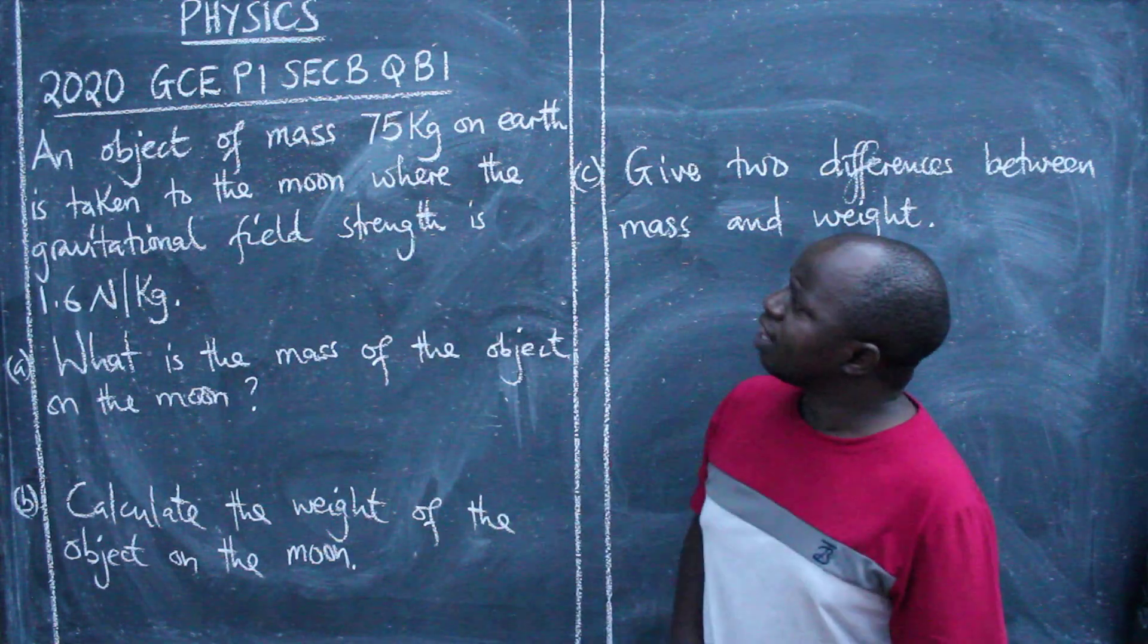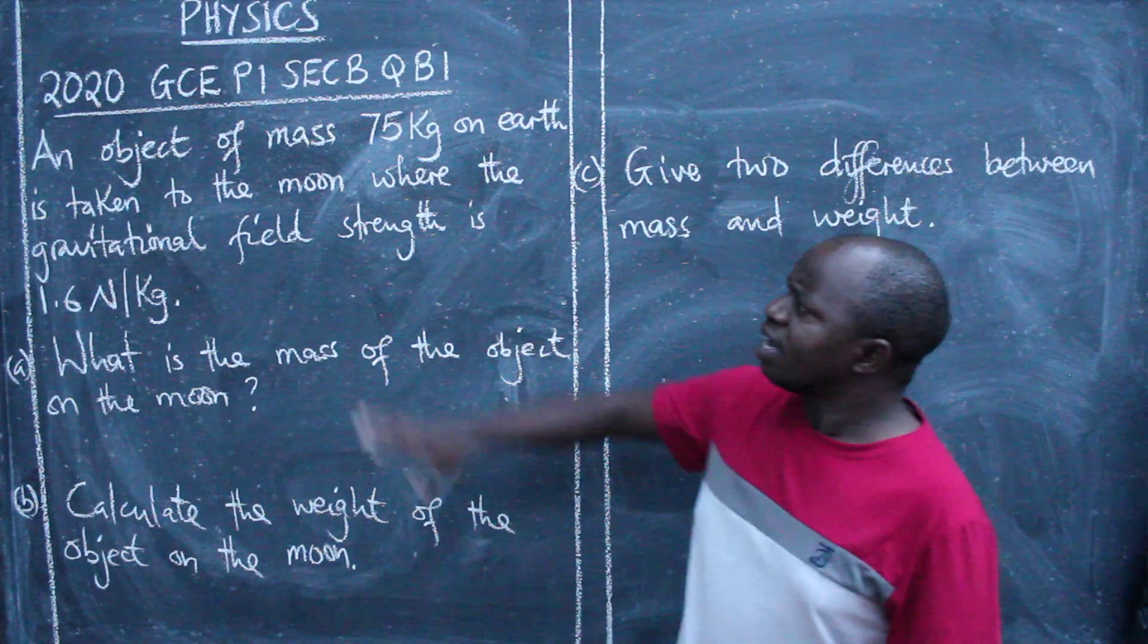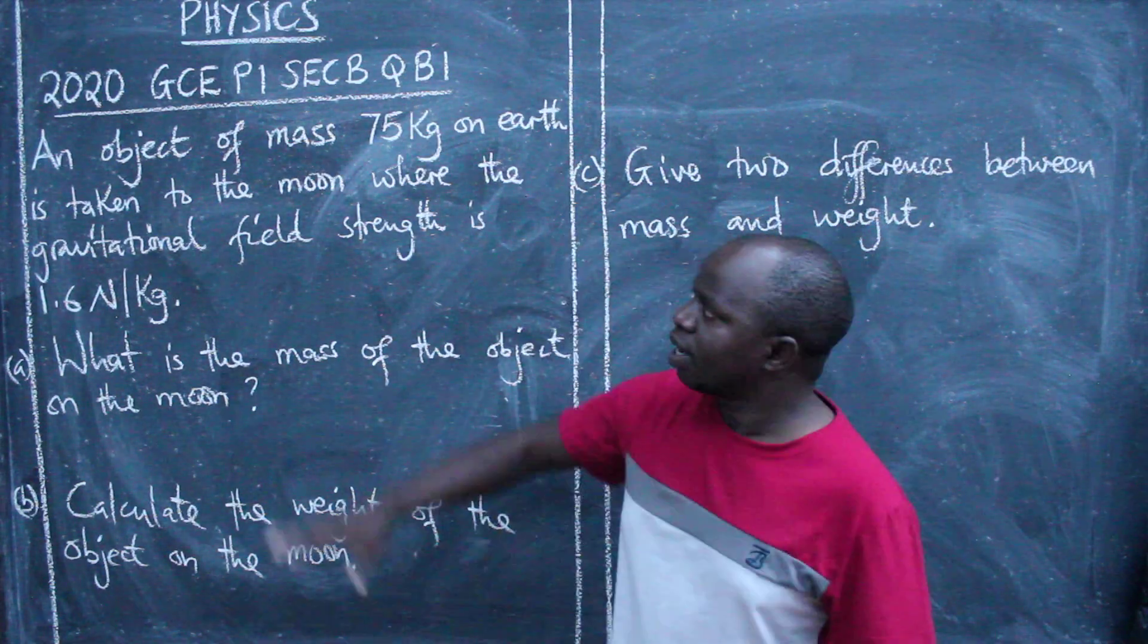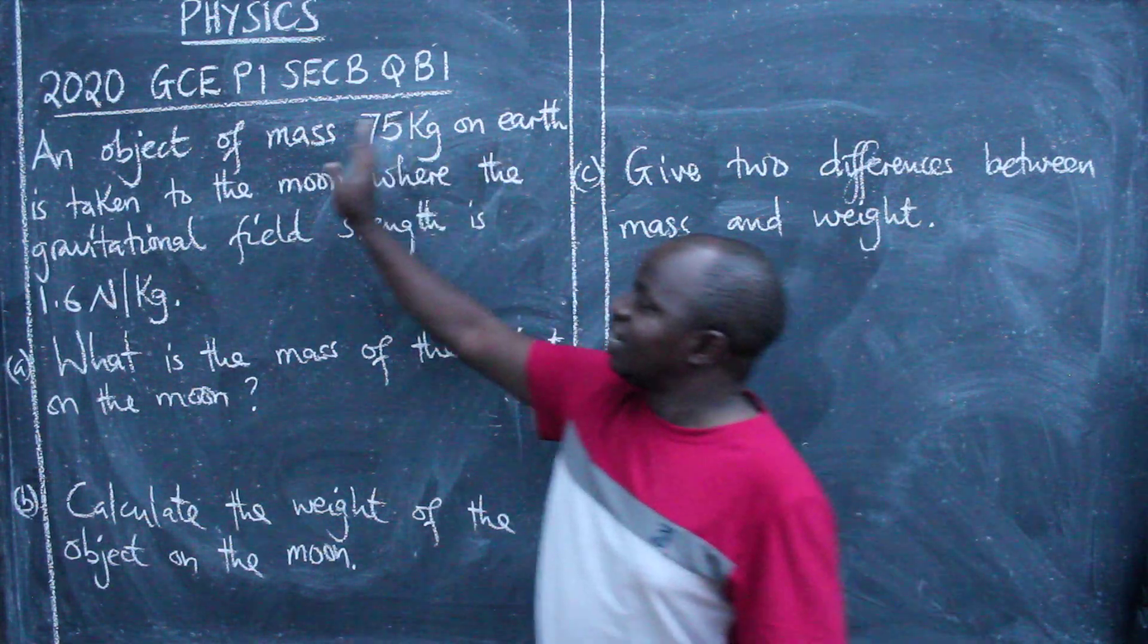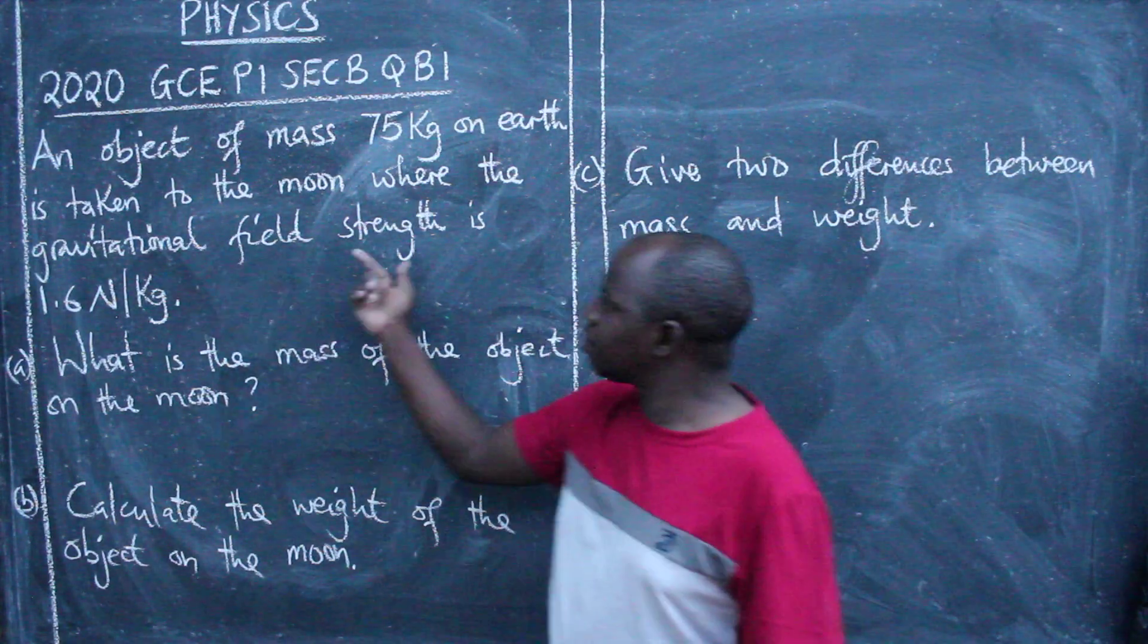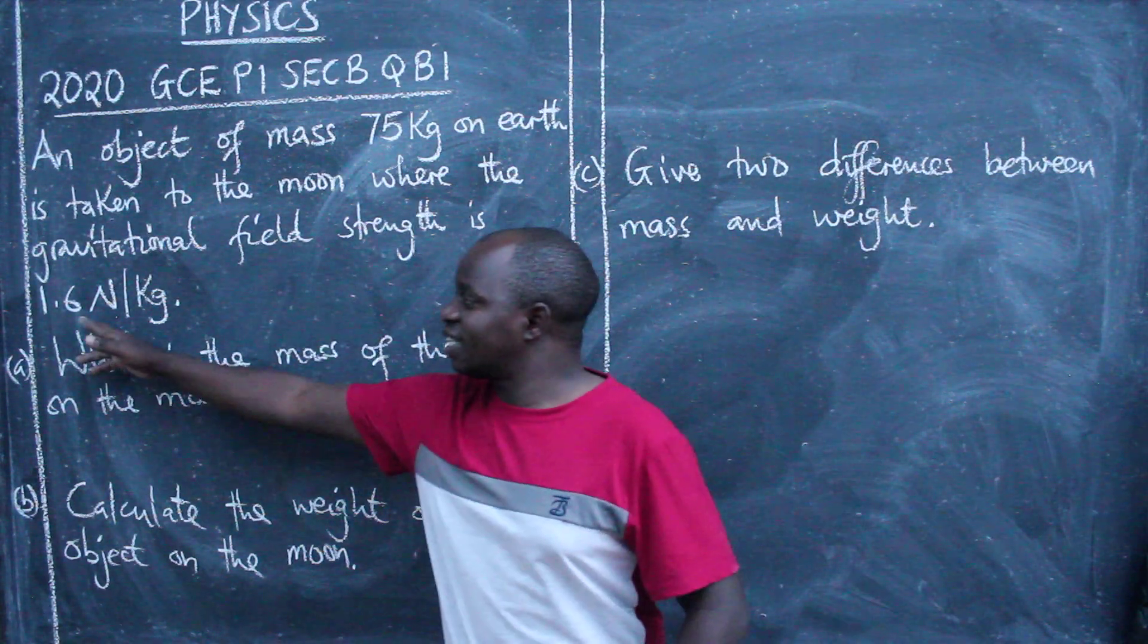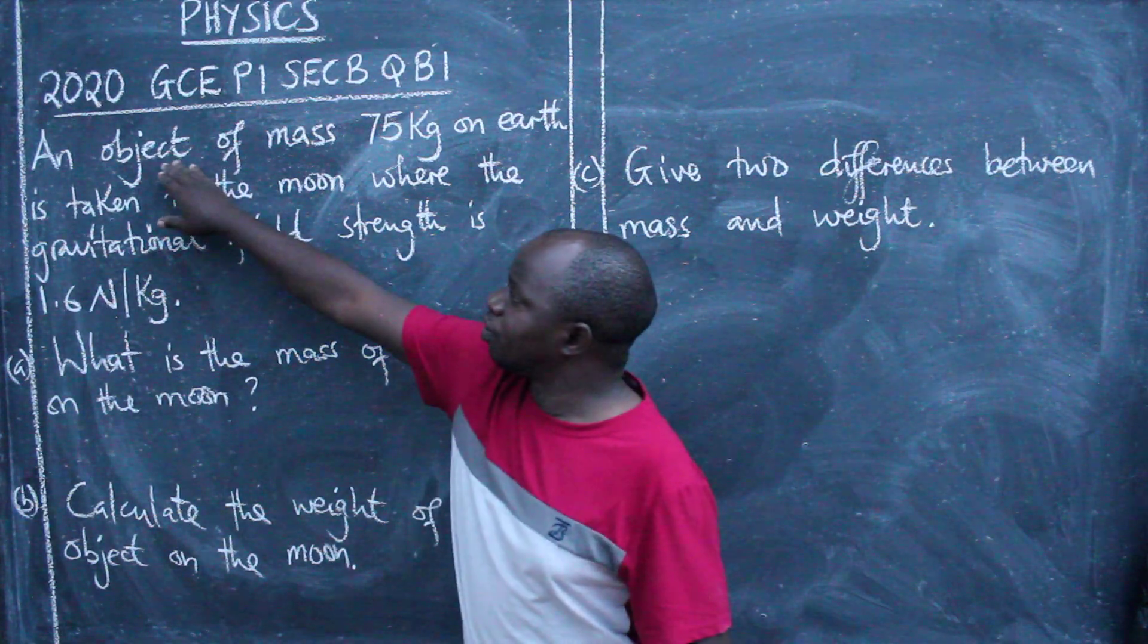Section B, this was question B1, physics paper one. An object of mass 75 kg on earth is taken to the moon where the gravitational field strength is 1.6 newtons per kg. So this object which was on earth was taken to the moon.